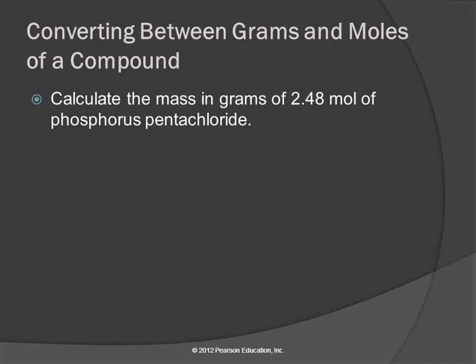We can use this to convert for compounds. Calculate the mass in grams of 2.48 moles of phosphorus pentachloride. Well, we need the formula for phosphorus pentachloride. What's the formula for phosphorus pentachloride? Chapter 5.